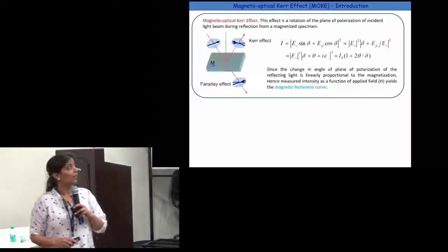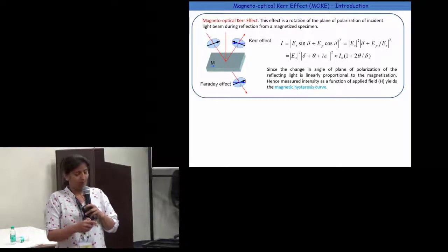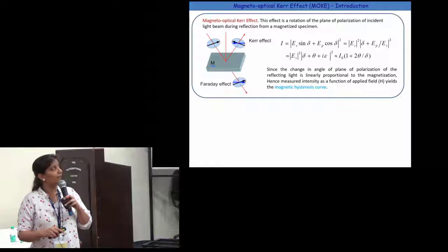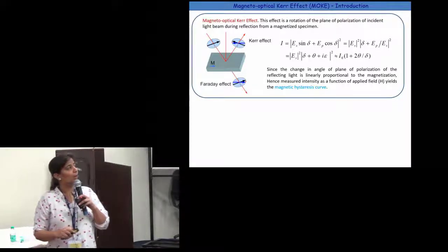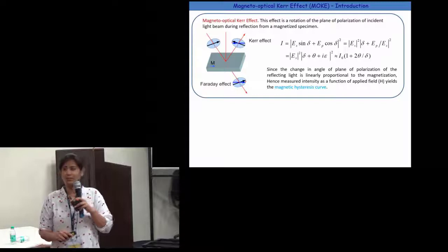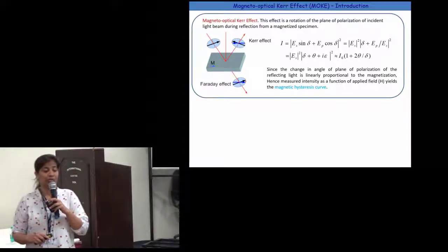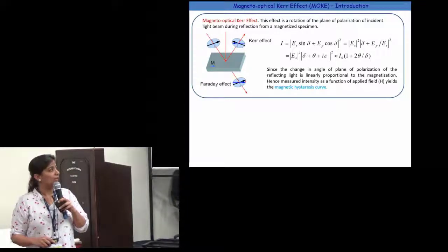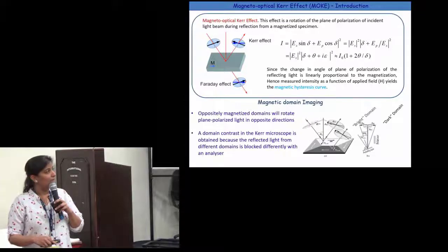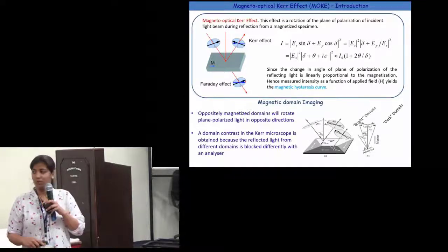Now I will explain the Magneto-Optical Kerr Effect. Whenever a linearly polarized light falls onto a magnetized sample, in the reflection there is a change in the plane of polarization — a rotation. If we measure the intensity as a function of applied field we get a magnetic hysteresis loop. Similarly, we can also observe magnetic domains.